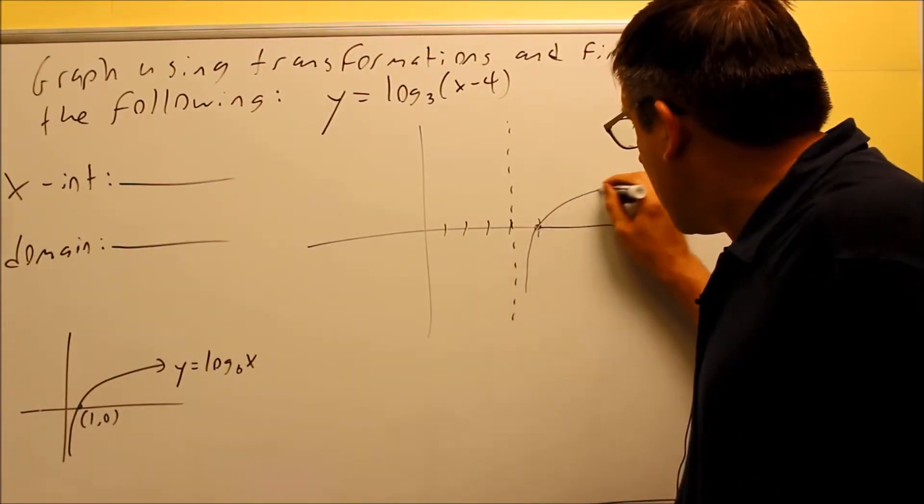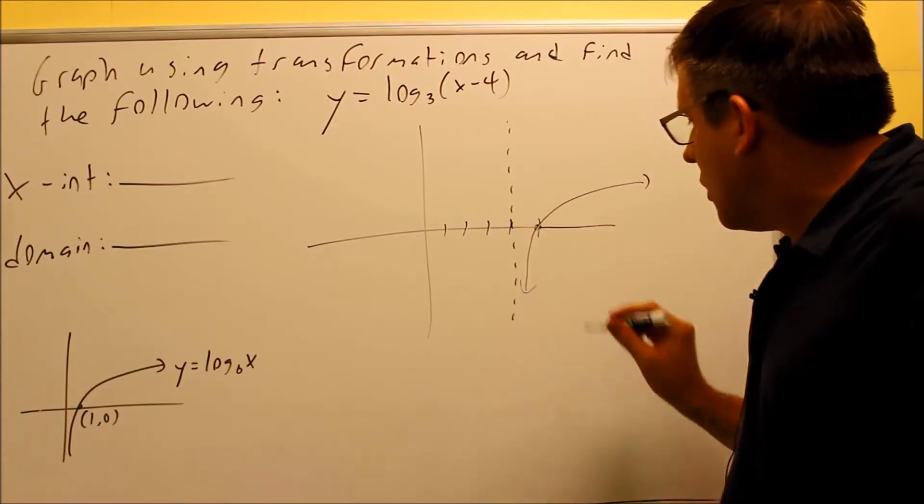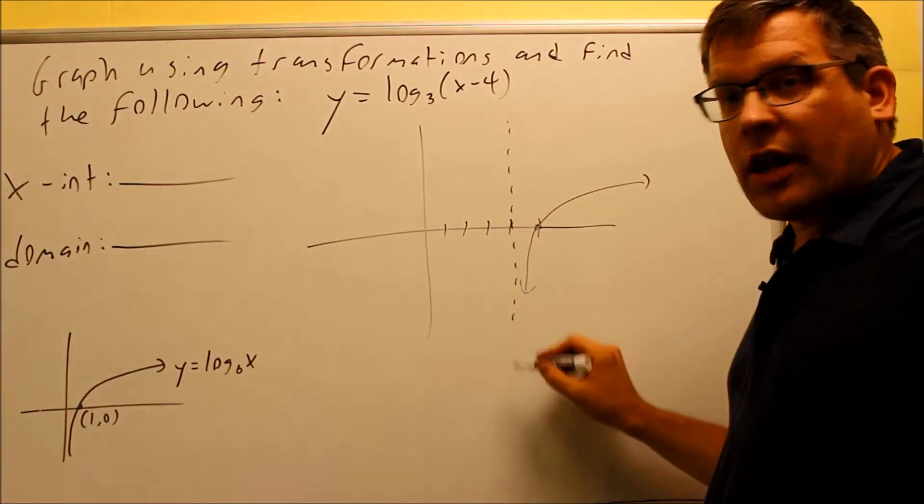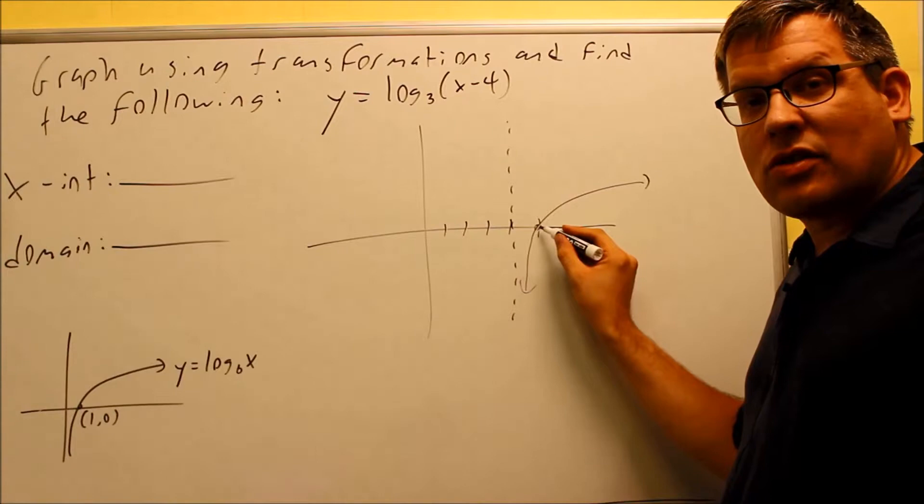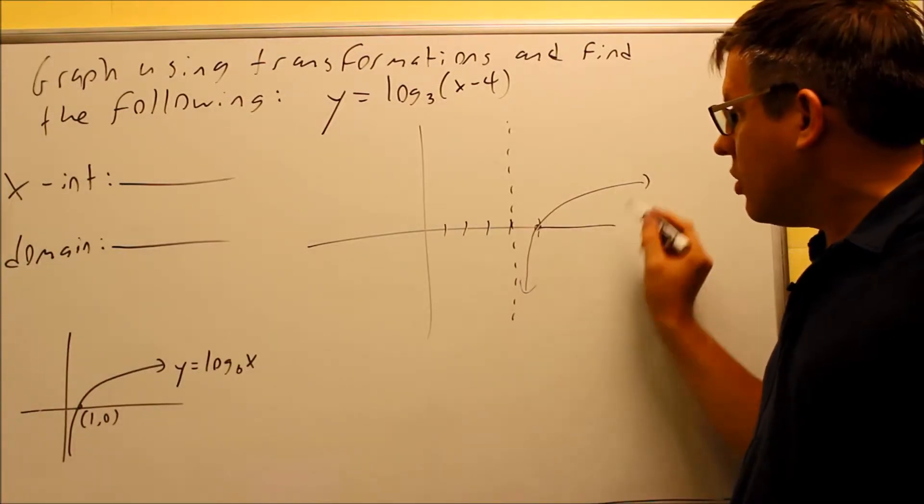So therefore, the graph will come up, and it's going to look something like this. It'll come up, it'll follow the vertical asymptote there, it'll hit the x-axis right here, and it'll continue.